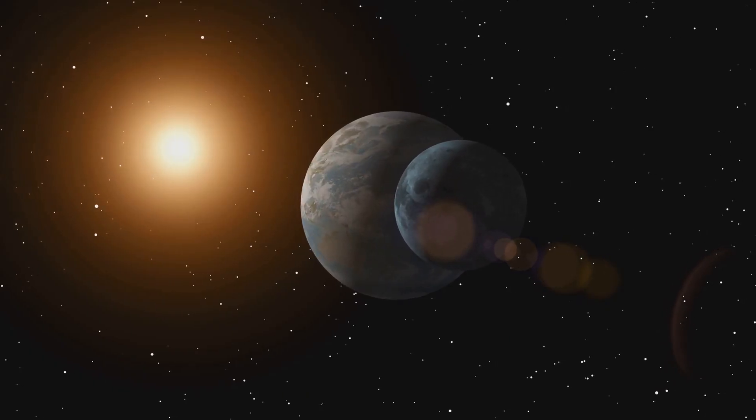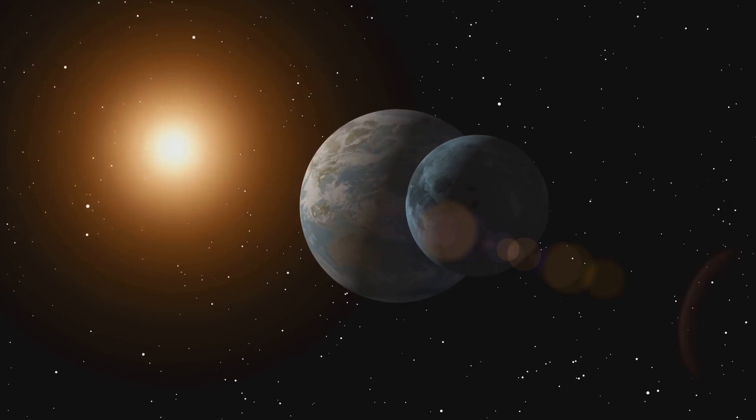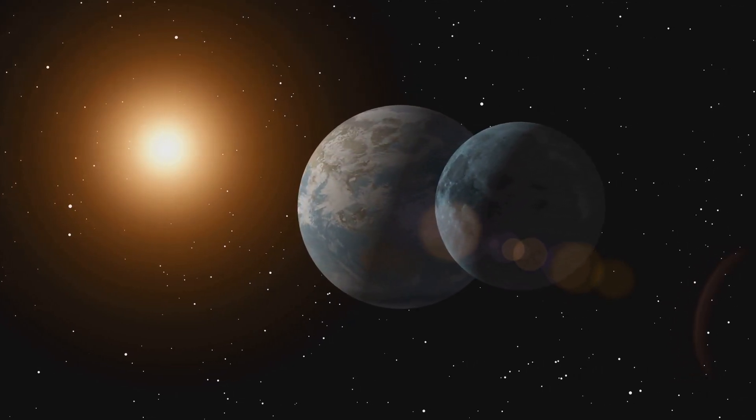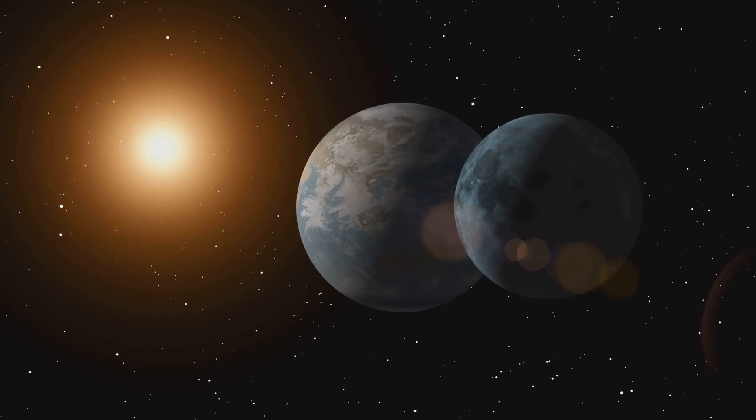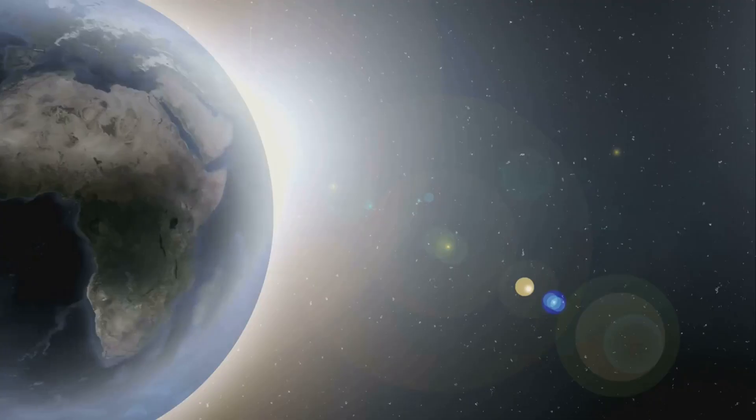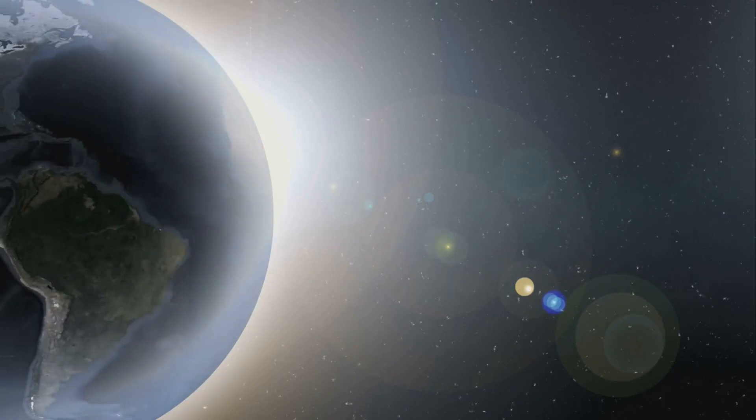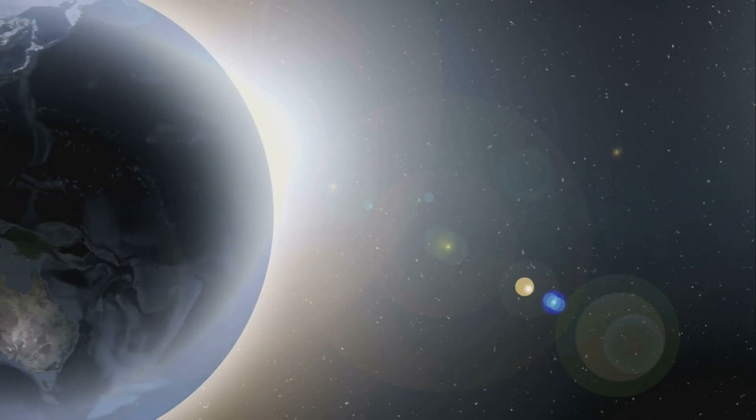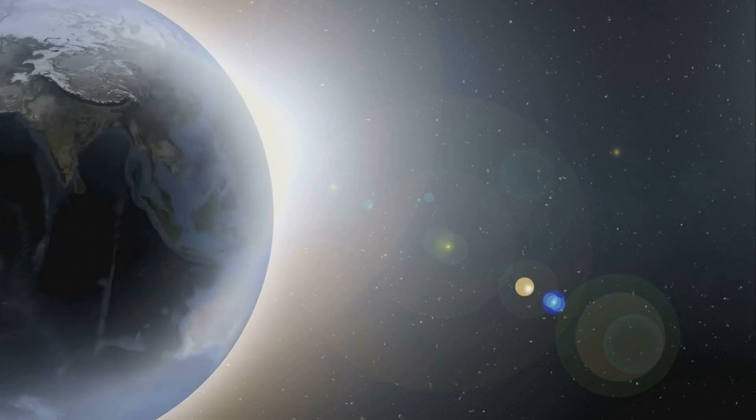The close proximity to its star also means that HD 40307 G is likely tidally locked, with one side always facing its star and the other side always facing away. This results in extreme temperature differences between the two hemispheres, creating a stark contrast in climate, and potentially affecting any atmosphere the planet might have.